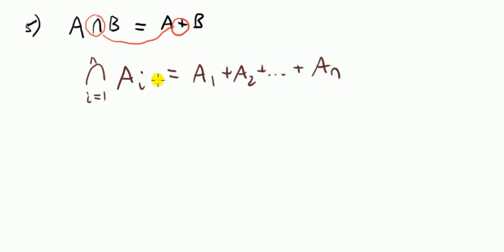So more generally the mistake is this: if we use intersection notation, intersection of n sets equal A1 plus A2 plus and so on plus An. For n number of sets, this is, from what we've described up here, this is wrong.